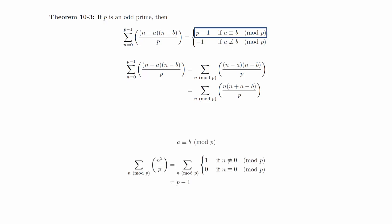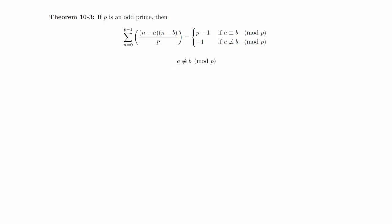If a is congruent to b modulo p then we can compute the sum directly. So suppose that a is not congruent to b modulo p. To simplify the notation let lambda equal a minus b.